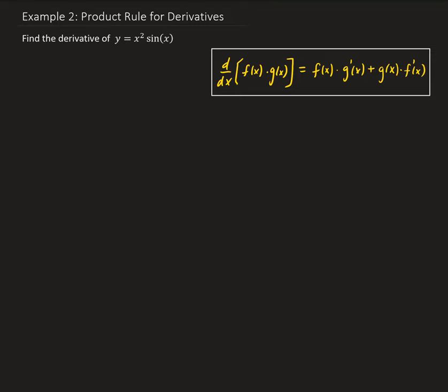In this example, we want to find the derivative of y equals x squared times sine x. So we're going to do this by applying the product rule for derivatives.